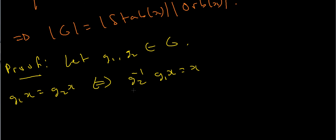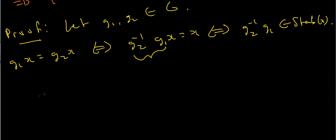But if G2 inverse G1X equals X, that means that G2 inverse G1 actually stabilizes X because when I take this thing and apply it to X, I get back my X. So this means that G2 inverse G1 belongs to the stabilizer of X because it stabilizes X. Now that's true if and only if G1 stab X equals G2 stab X.